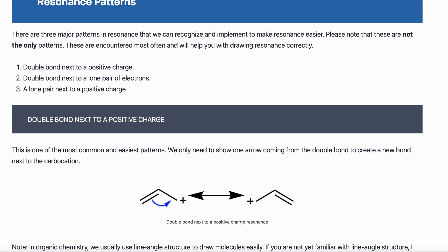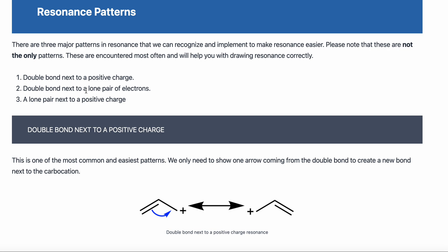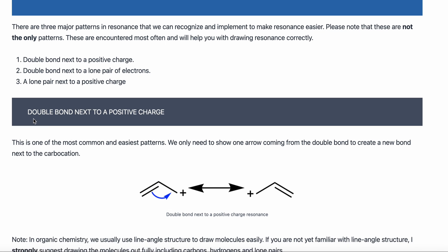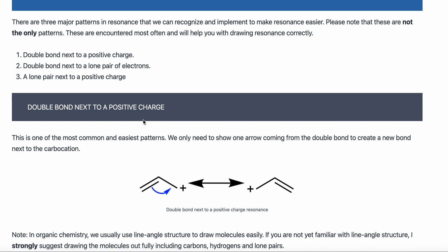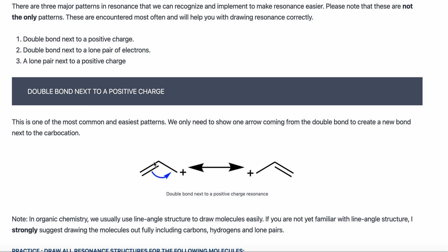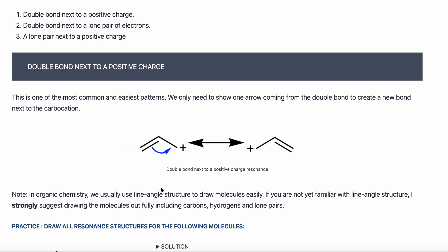These are the three major resonance patterns — not the only patterns, but the most popular ones you will see most often. The first pattern is when you have a double bond next to a positive charge. If I have a double bond next to a positive charge, I can move the electrons from this double bond to create a double bond on the other side.